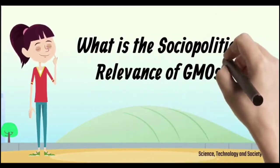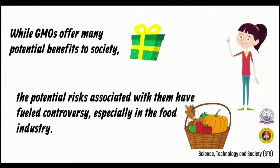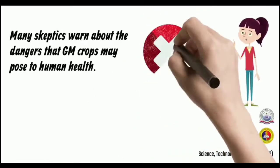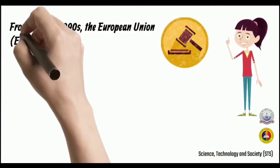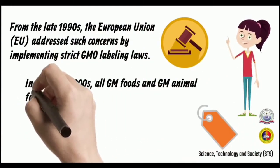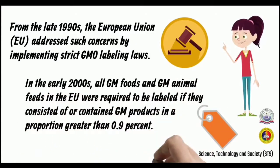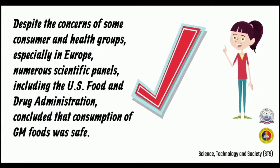Regarding the socio-political relevance of GMOs: while GMOs offer many potential benefits to society, the potential risks have fueled controversy, especially in the food industry. Many skeptics warn about dangers GM crops may pose to human health — for example, genetic manipulation may potentially alter the allergenic properties of crops. From the late 1990s, the European Union implemented strict GMO labeling laws. In the early 2000s, all GM foods and animal feeds in Europe were required to be labeled if they contained GM products in a proportion greater than 0.9%. Despite concerns from some consumer and health groups, numerous scientific panels including the U.S. Food and Drug Administration concluded that consumption of GM foods was safe.